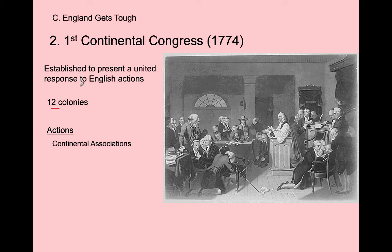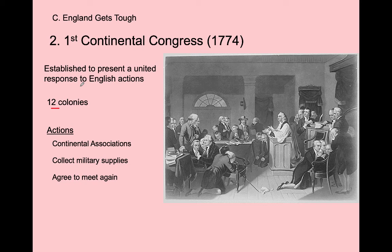The Continental Congress creates continental associations to enforce the non-importation boycott agreements, which worked before. They also begin collecting military supplies—gunpowder and muskets—just in case: extending an olive branch for peace, but getting their fist ready for war. Since there are no military arsenals or factories in the colonies, they need to start saving weapons. They agree to meet again, sending letters to the king asking him to stop, and warning that if ignored, there will be a Second Continental Congress—which turns out to be the more famous one, meeting for years.